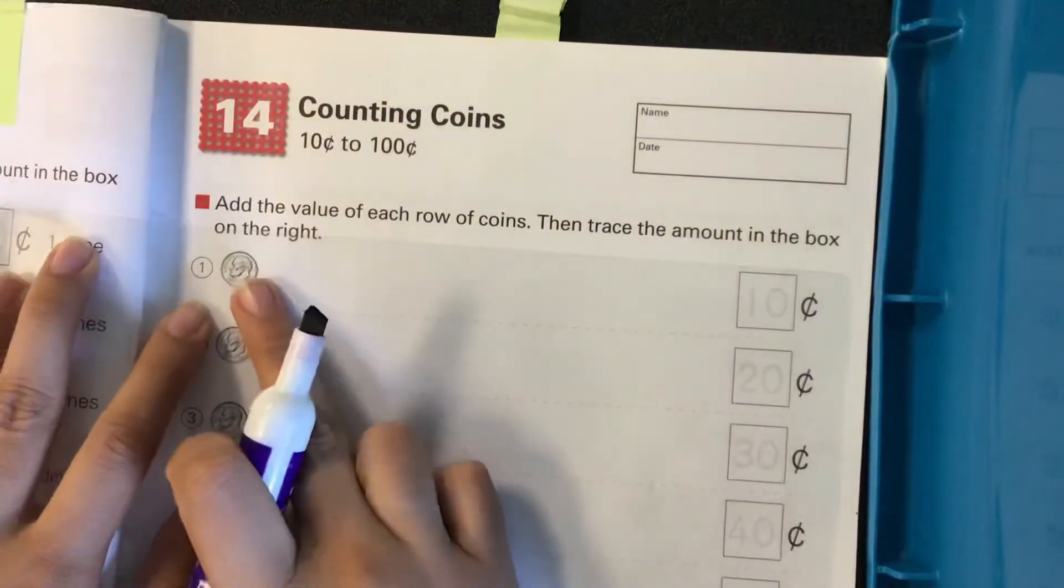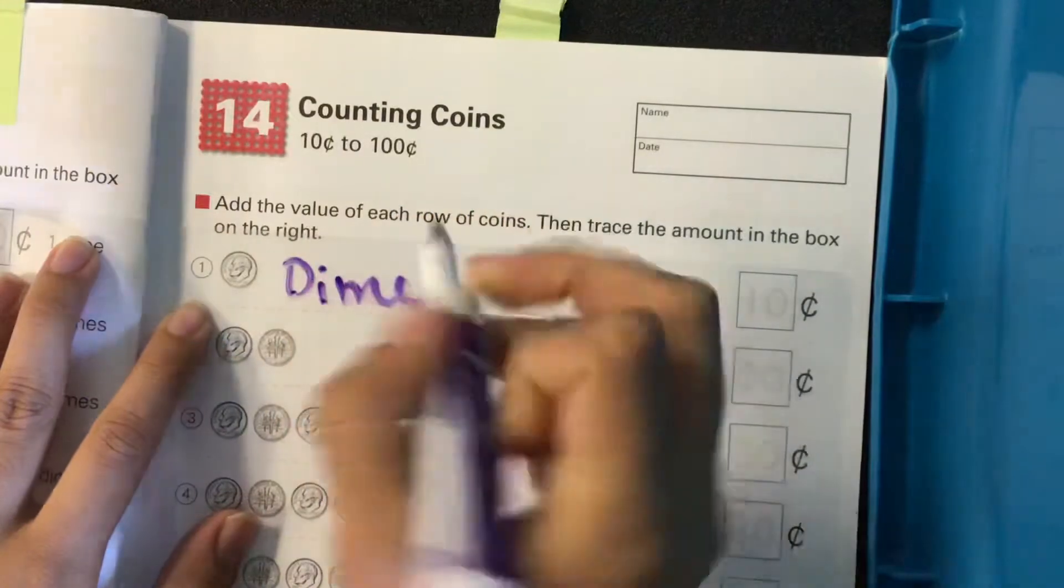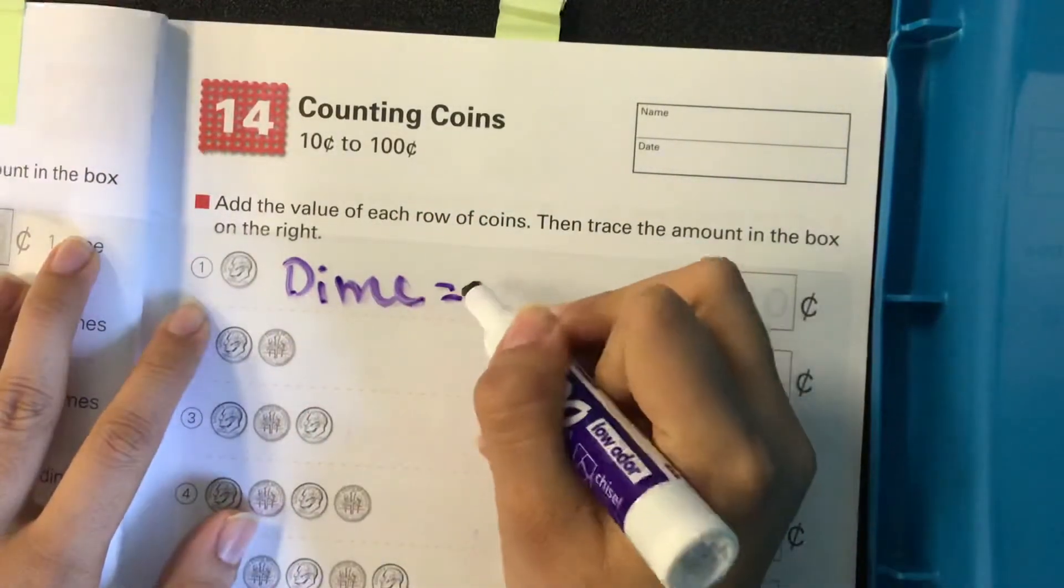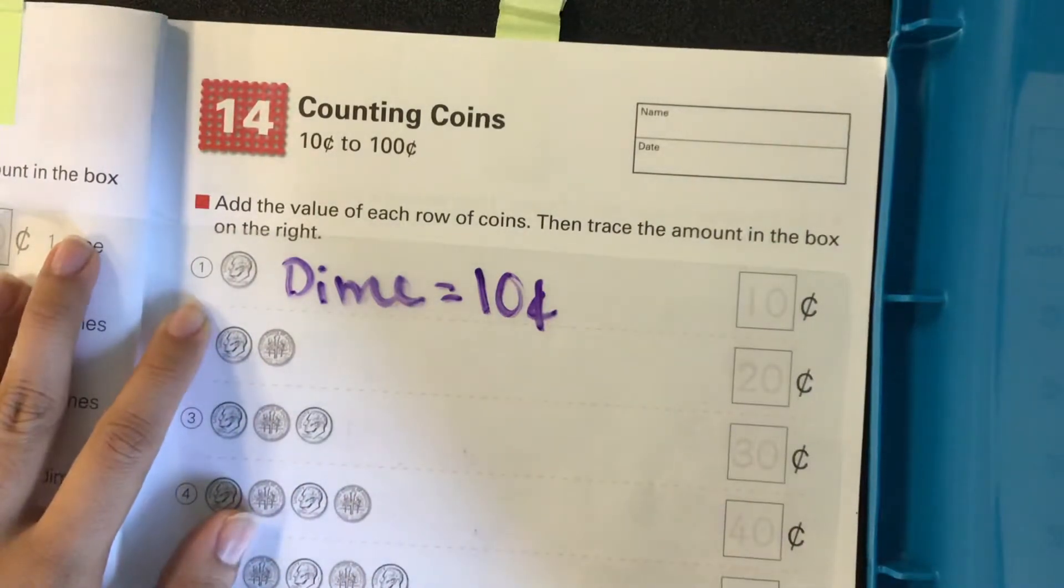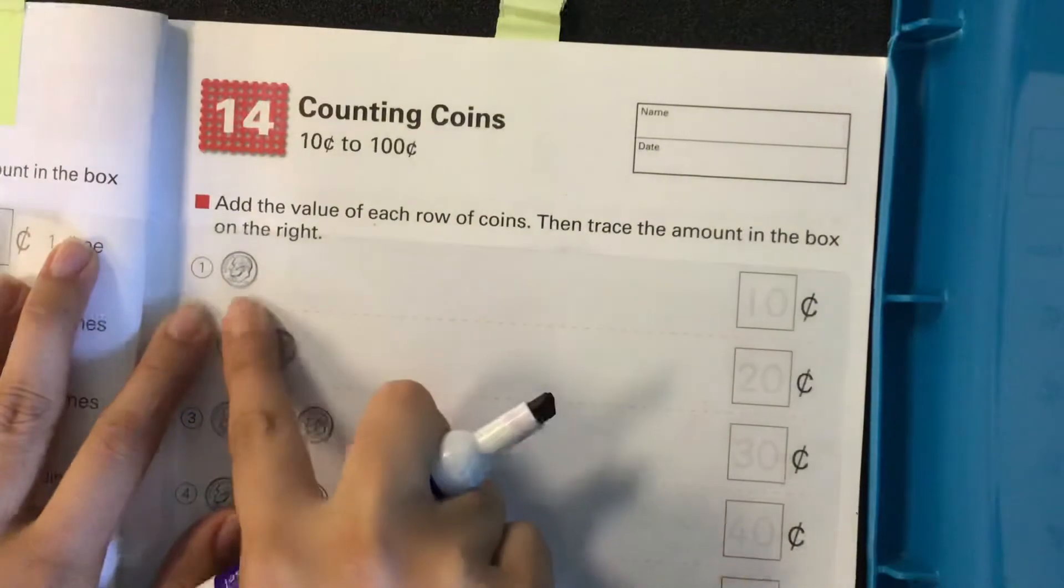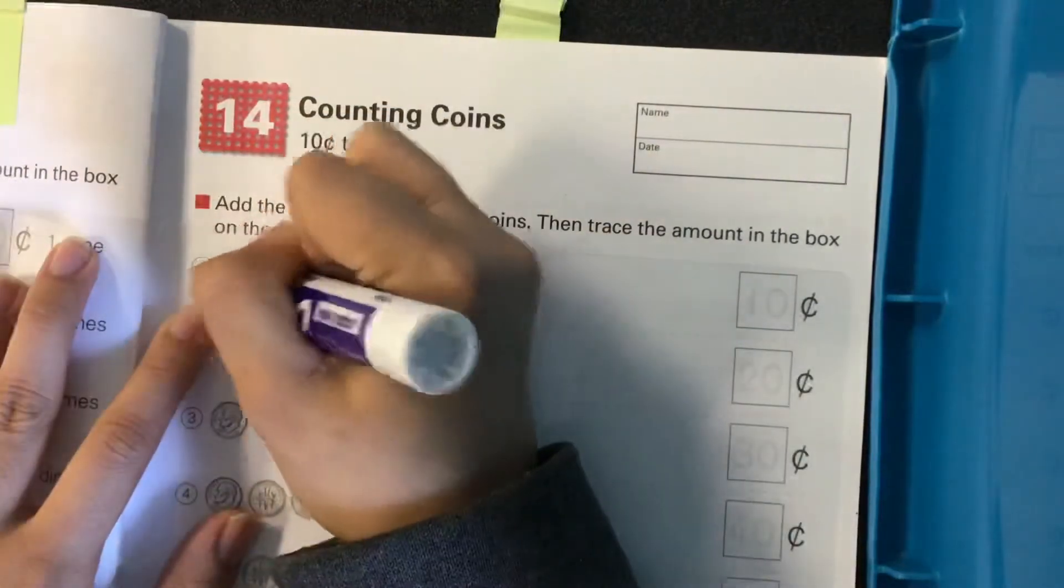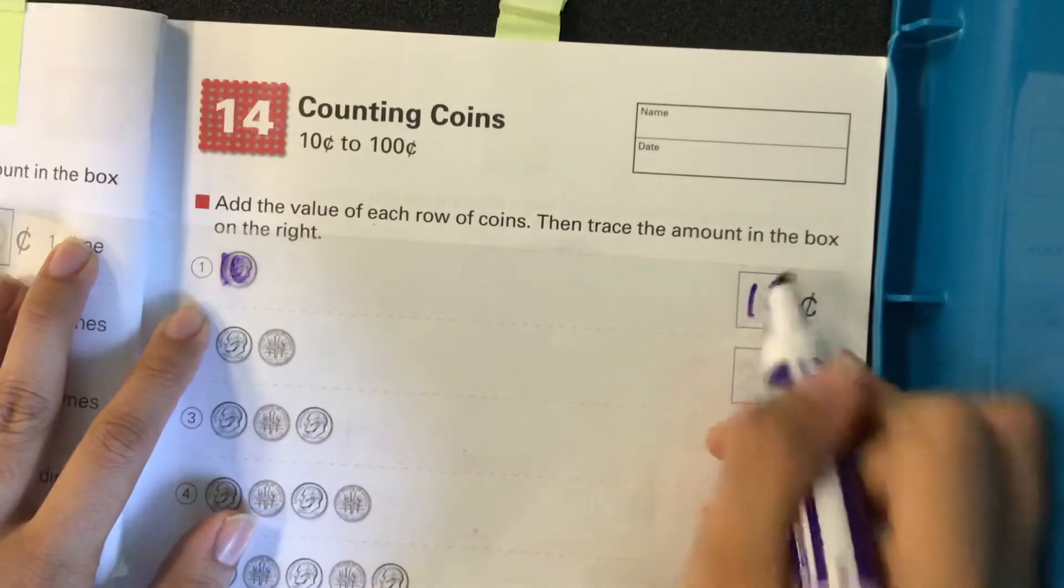So a dime, we'll write it here, a dime is worth ten cents. So if in problem number one we have one dime we know that is worth ten cents. So we can go ahead and put that in the answer.